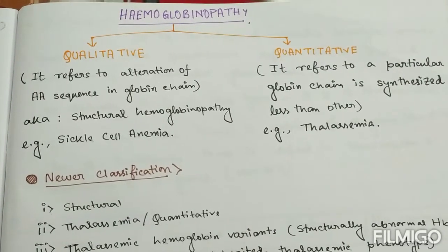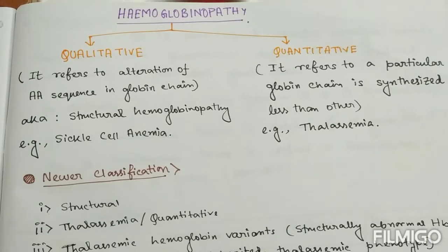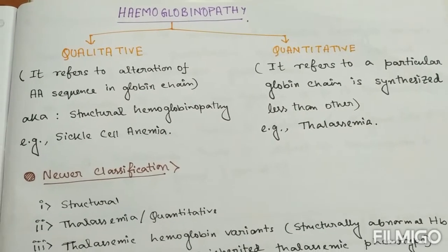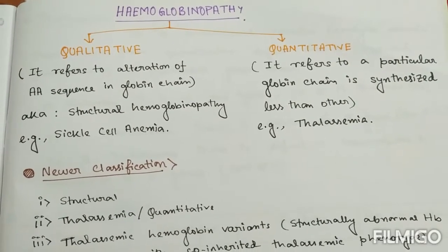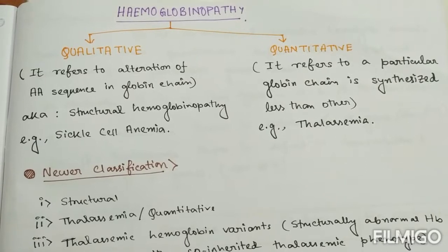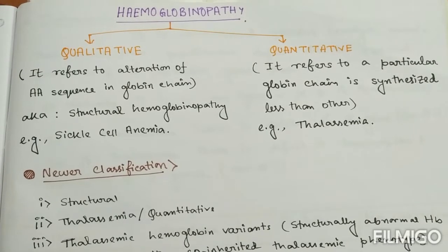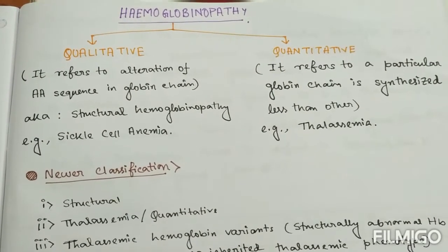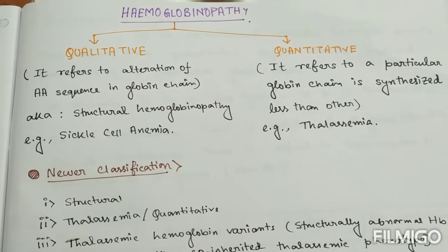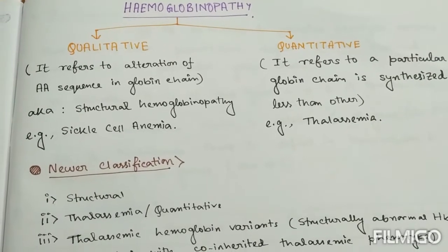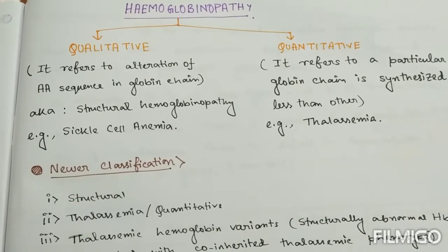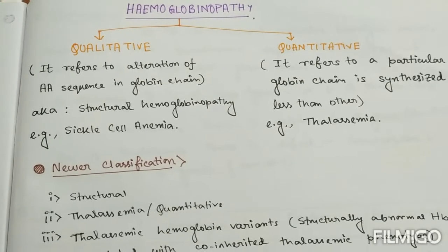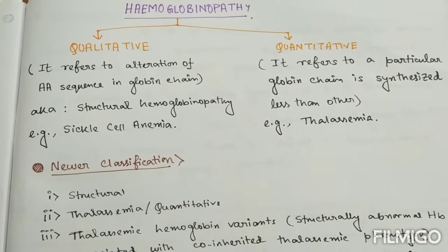Qualitative hemoglobinopathy refers to alteration of amino acid sequence in globin chains, and quantitative refers to a particular globin chain being synthesized less or more. Qualitative hemoglobinopathy is also known as structural hemoglobinopathy, as we see in sickle cell anemia.